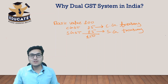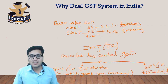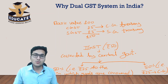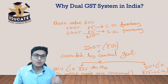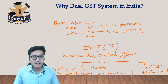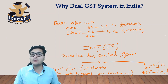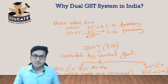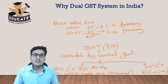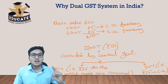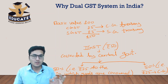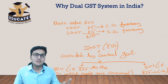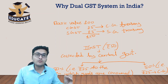Now let's see what happens in case of IGST, that is in case of an interstate transaction. Suppose a supplier charges Rs. 50 as IGST from its customer. This Rs. 50 will be given to the central government. The central government will then give Rs. 25 to the state government in which the goods are consumed, and will keep Rs. 25 with itself. For example, a businessman in Gujarat supplying goods to Maharashtra will pay IGST to the central government.